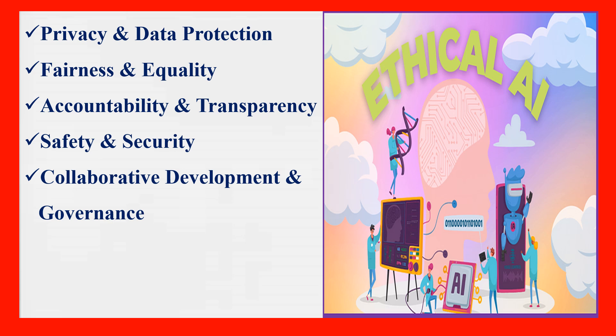Key aspects of Ethical AI include privacy and data protection — ensuring that personal data is collected, shared, stored, and used only with informed consent, adequate security measures, and clear data ownership policies. Fairness and equality means avoiding bias, discrimination, or prejudice against marginalized communities, vulnerable populations, or underrepresented groups based on factors like race, gender, ethnicity, religion, or disability status.